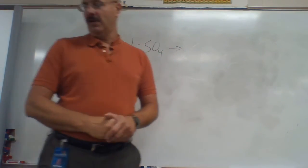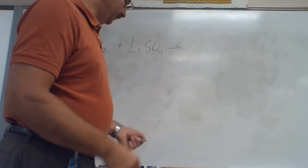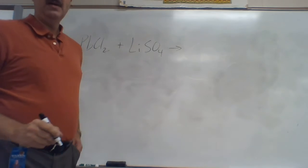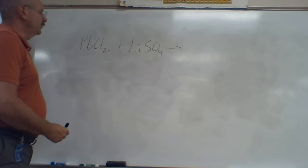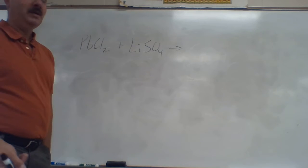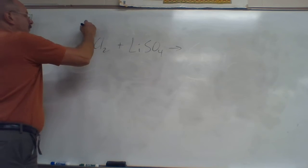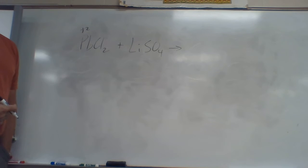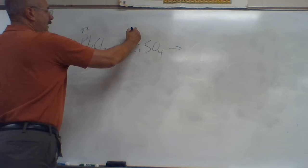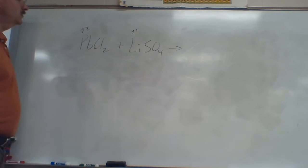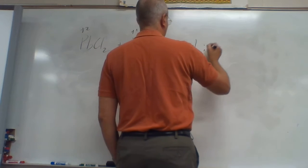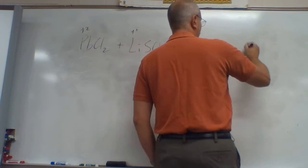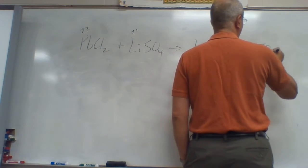This is part number three for balancing equation review. We're on the double replacement reaction. I wrote the first one already. On these, we're going to take the two positives and get them to trade places. On this one, Pb is a plus two and Li is a plus one — get those two to trade places. So Li is going to join up with Cl, and Pb joins up with SO₄.